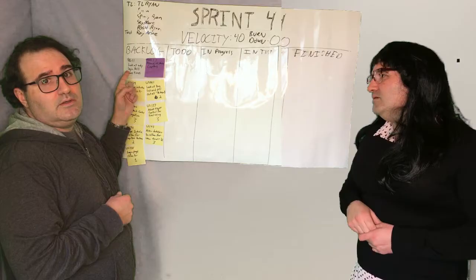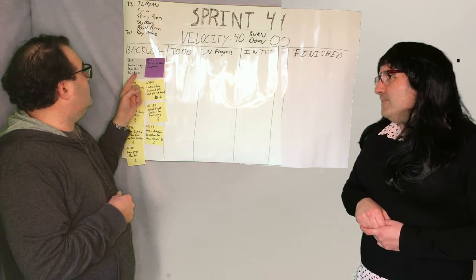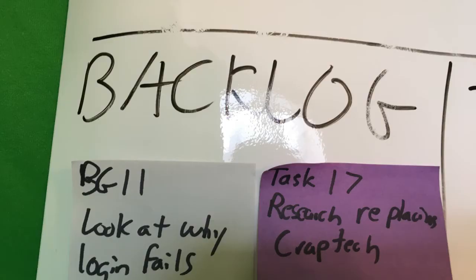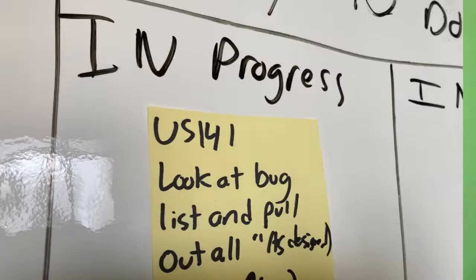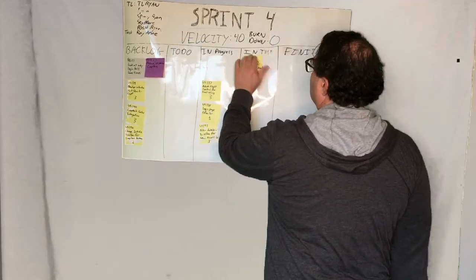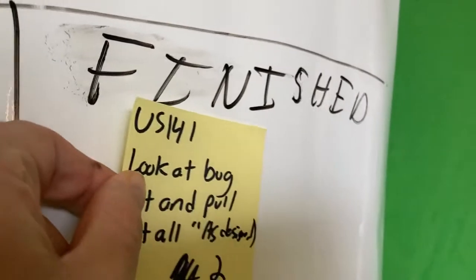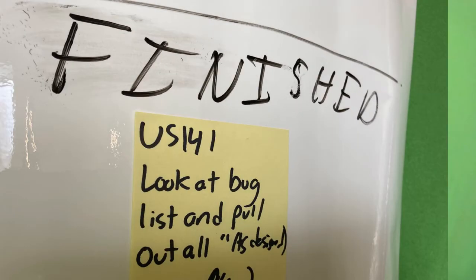The tracking board is usually placed in a central area near the team and contains four swim lanes. Tickets start in the backlog. When a team commits to working on certain tickets, they put it in the to-do swim lane. Then the developer will take the ticket and move it to in-progress while they're working on it. When it's done, it gets moved to testing, and the tester will take over. Then when testing finishes, it goes into the finished column, where it gets deployed immediately to production if you're using Kanban, or at the end of the sprint if you're using Scrum.